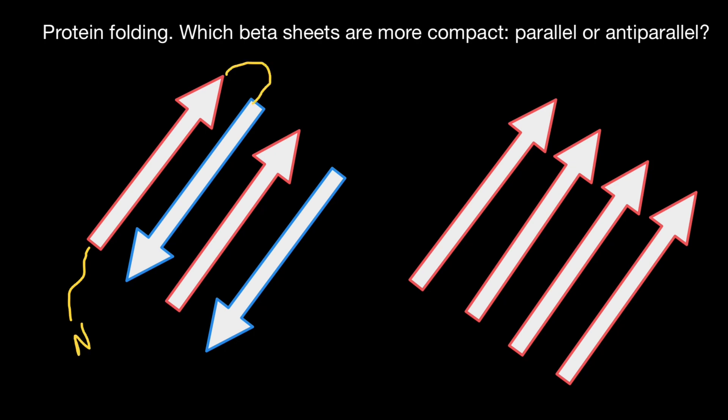Now let's connect these beta sheets with loops, and here we are going to have C terminus. This is an example of the antiparallel.